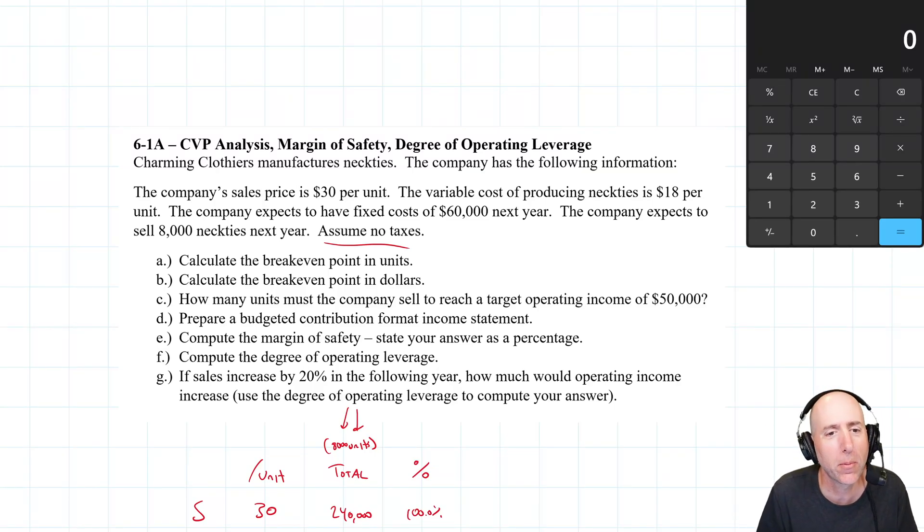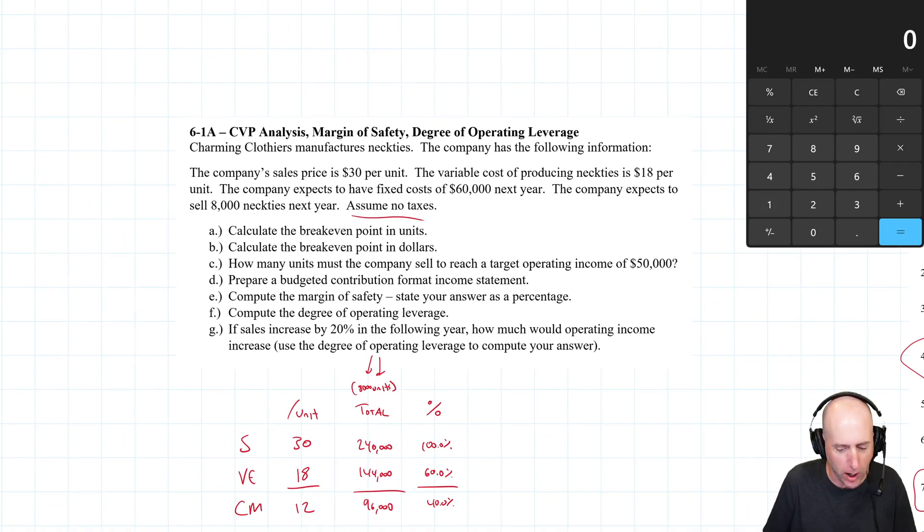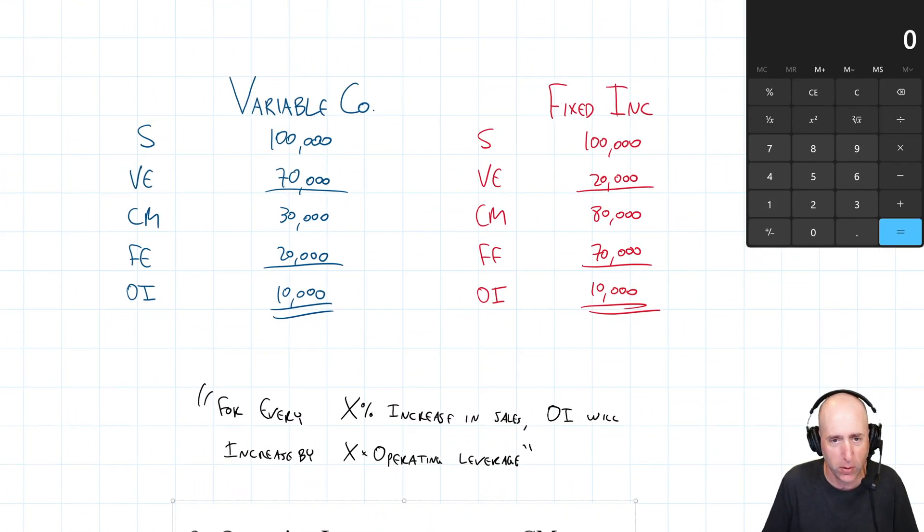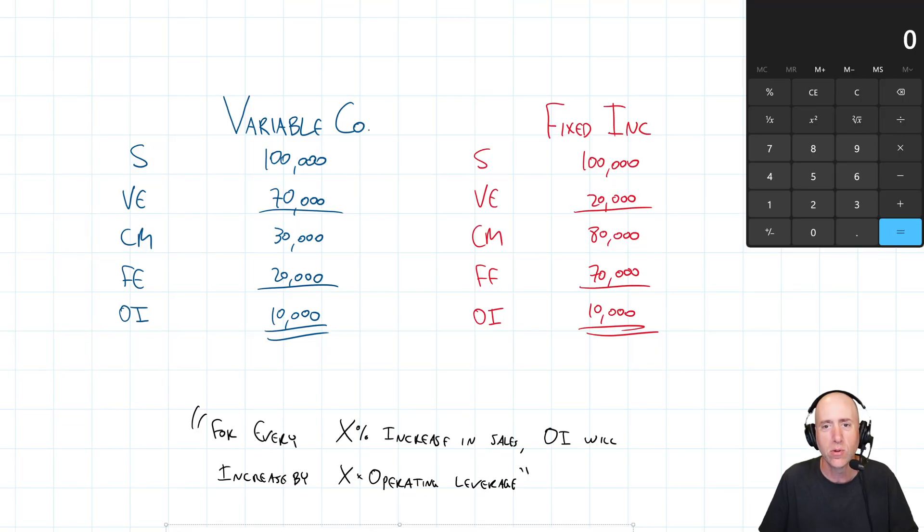Welcome back. We've been working through problem 6.1.8, and it has been going fantastically. Well, we got down to part F and I said, operating leverage, that's kind of tricky. I want to devote its own video to F and G, which are both related to operating leverage. And I want to explain the concept of operating leverage. I want to illustrate it with these two companies. I think by the end of this, you're going to have a pretty good understanding of what operating leverage is.